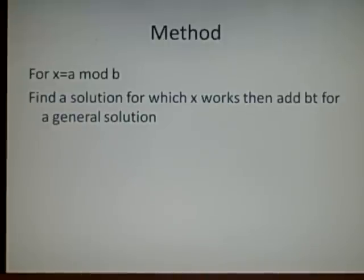Method 4, we'll have an equation x is congruent to a mod b. We find a solution for which x works, so it might be 7, and then we add bt. Now, t is just a multiplier, so it can be any letter you like to find the general solution.